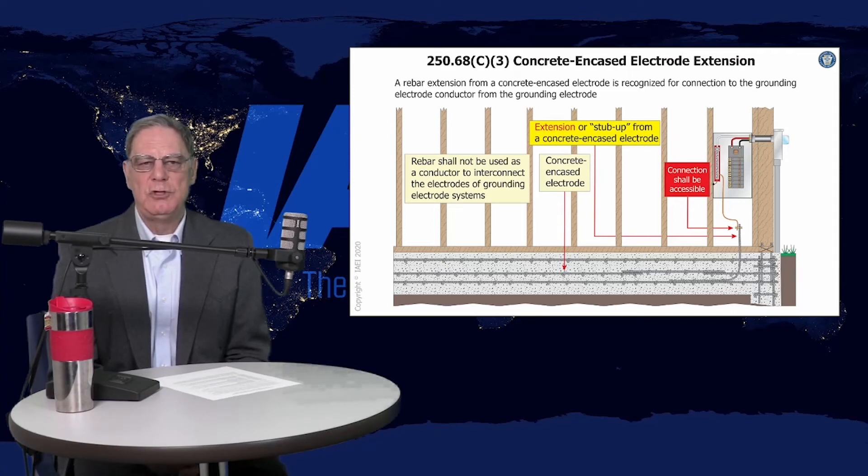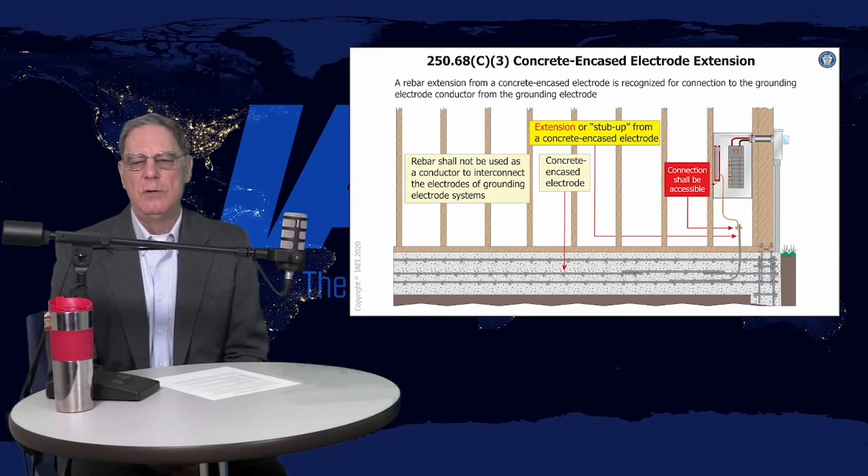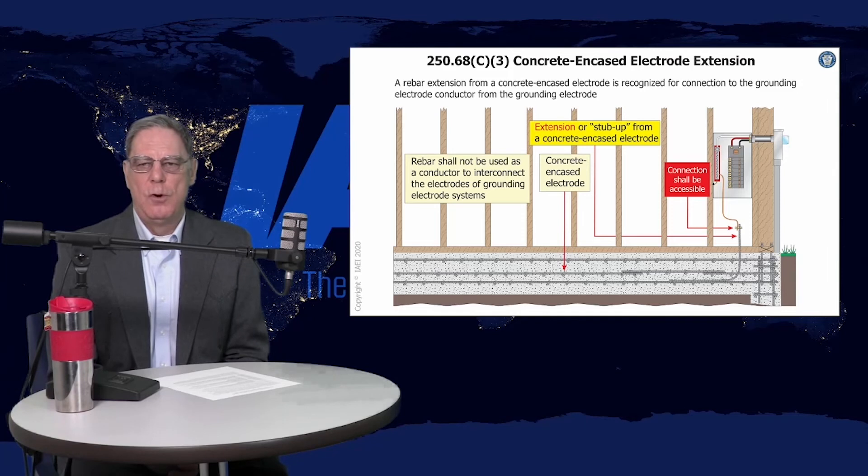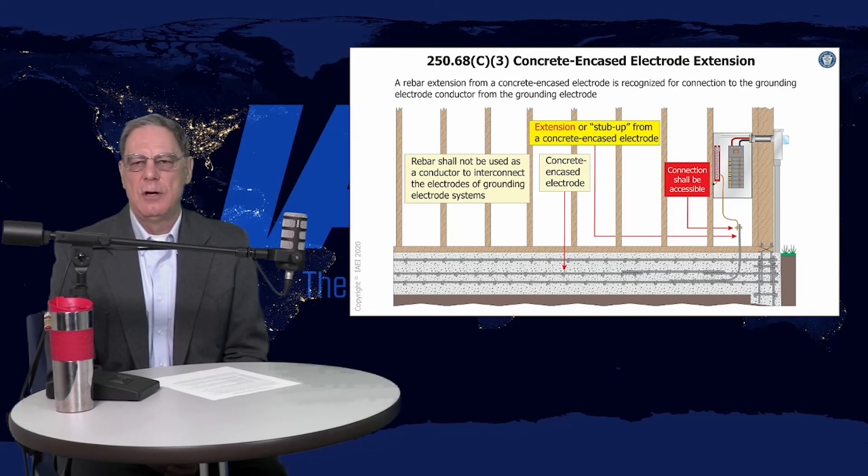With a building inspector doing the inspection of the foundation, they can verify that it constitutes a concrete encased electrode with the stub up. Keep it there, all done. Electrician comes on site to do a service, and they're supposed to connect it. It needs to be accessible.